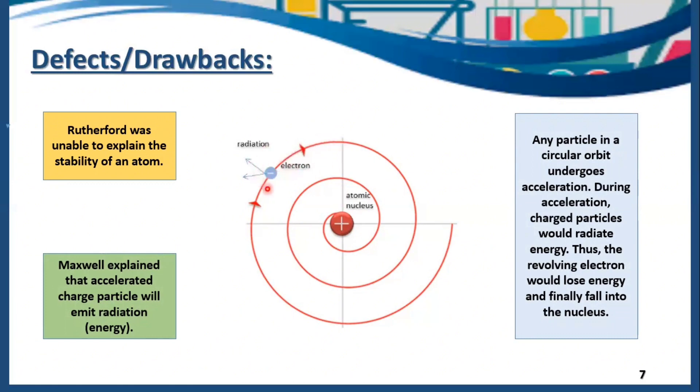electrons are continuously moving around the nucleus in a circular path with high speed. Any particle moving in a circular orbit always undergoes some acceleration. During acceleration, charged particles would radiate energy according to Maxwell. So electrons are charged particles and have acceleration. They will radiate energy. When electrons start radiating energy or losing energy by continuously moving around the nucleus, ultimately they should fall into the nucleus. The structure of the atom will collapse. This is a defect or drawback in Rutherford's atomic model.